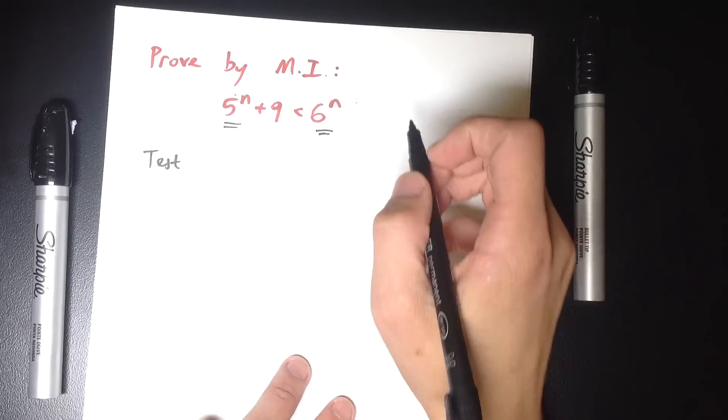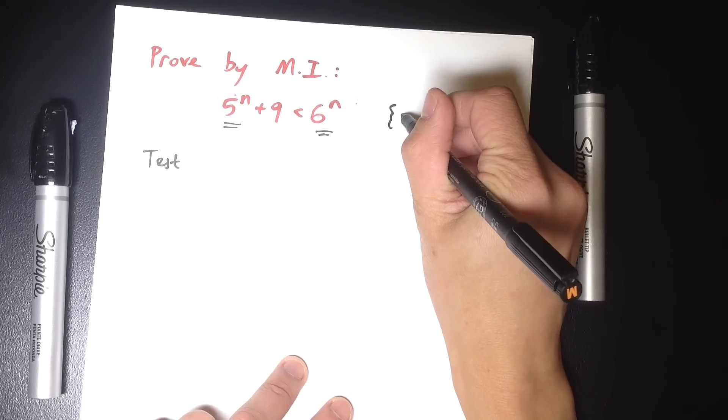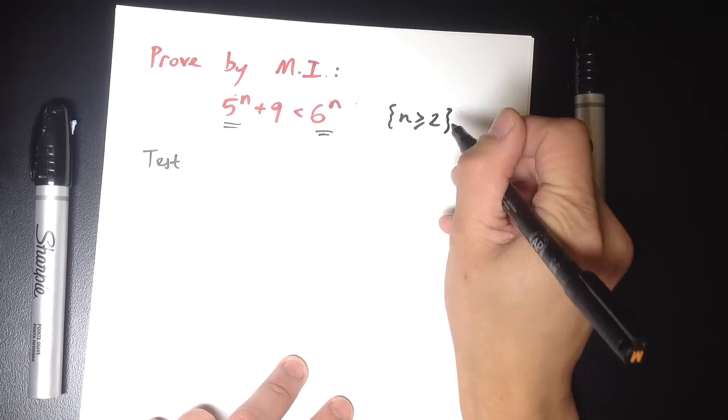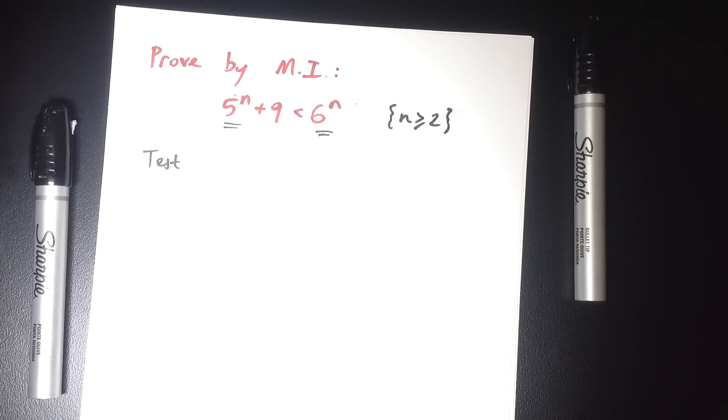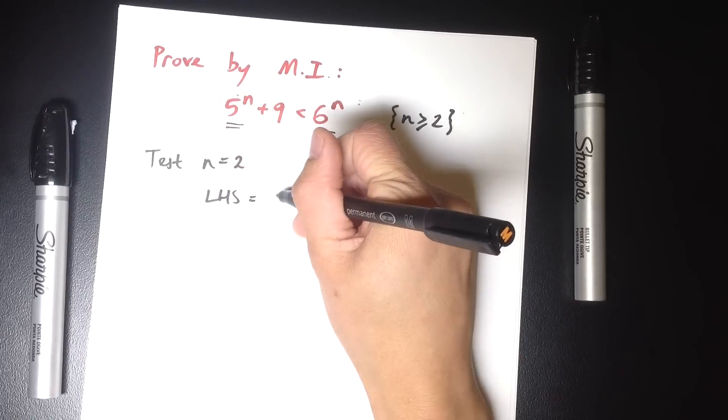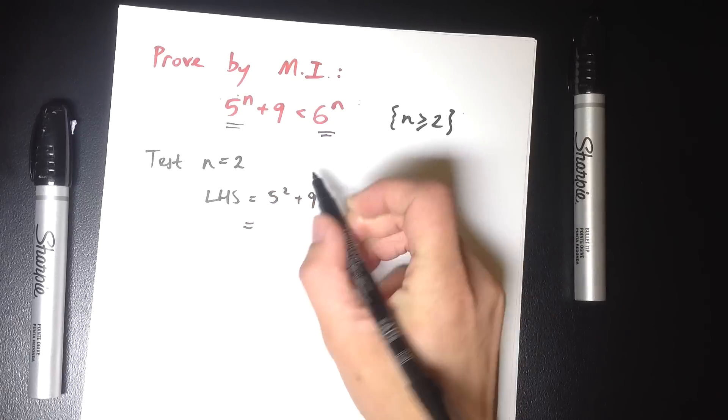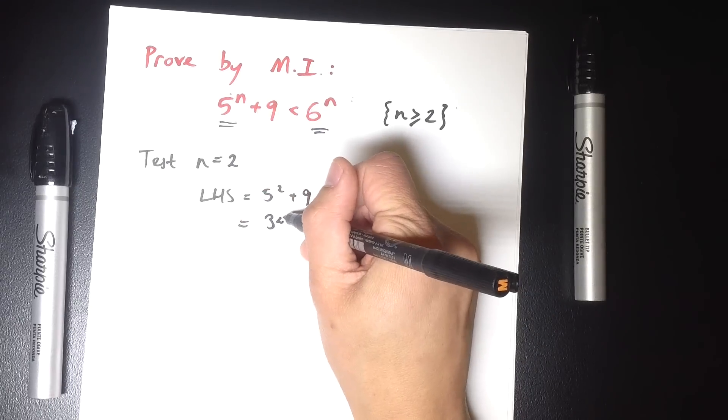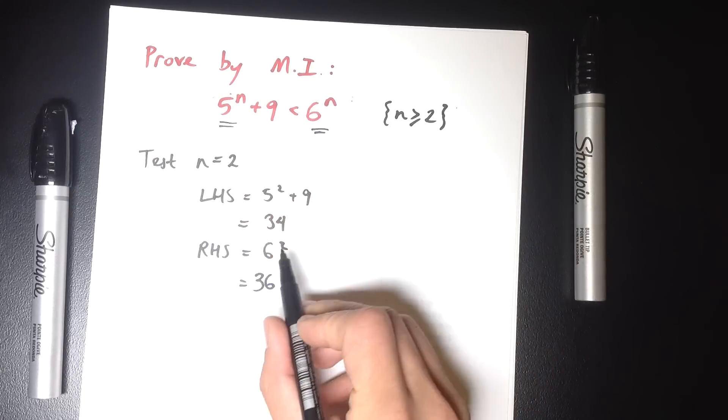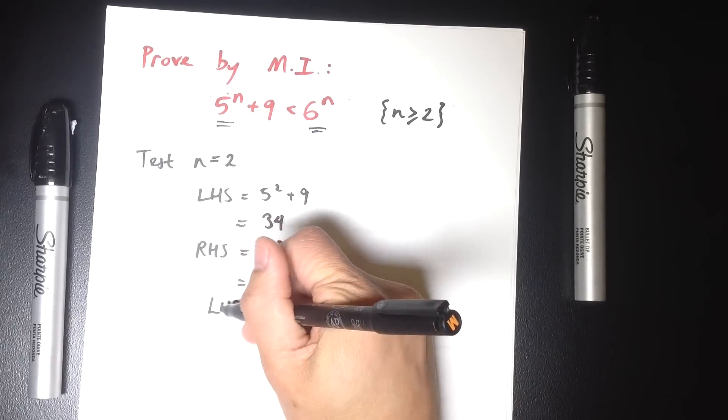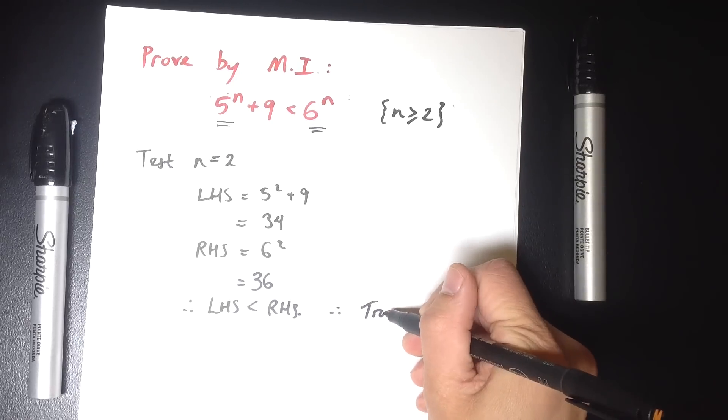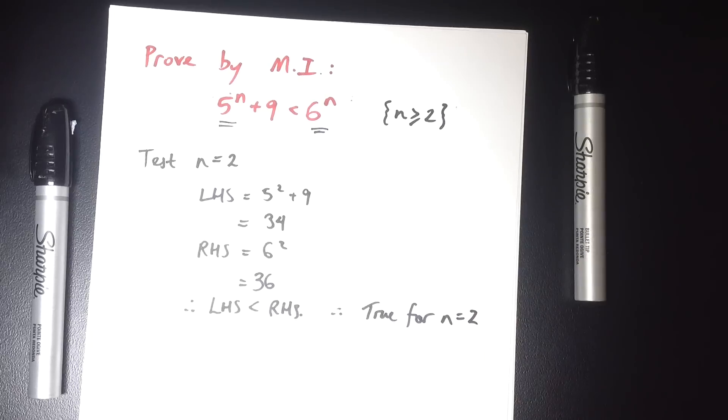So I'm assuming that for this question, the domain we've been given is n is going to be greater than or equal to 2. As you'll see in a second, 2 does work. So let's give this a spin. I'm going to test for n equals 2. My left-hand side, what's it going to be equal to? So 5 squared plus 9, that's 25 plus 9, which is 34. The right-hand side is 6 squared, so that's 36. So sure enough, the left-hand side is less than the right-hand side. Therefore, the inequality holds. It's true for n equals 2.